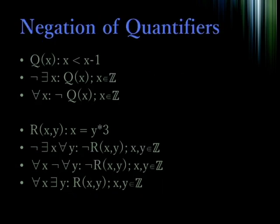We can also negate quantifiers. Here we can see that Q of X, for X is less than X minus 1, seems trivially false. So we can make the statement, there does not exist an X, such that Q of X is true, when X is chosen from integers. We can rephrase this by moving the negation inside one quantifier, and reversing that quantifier. So, there does not exist an X where this is true, becomes, for all X, Q is false.